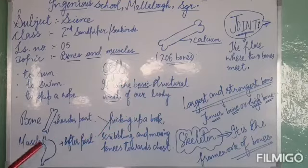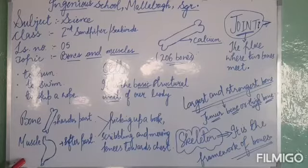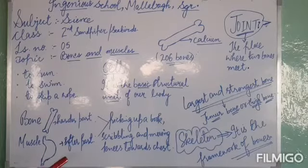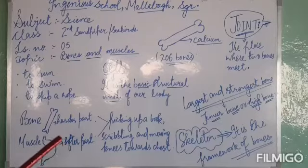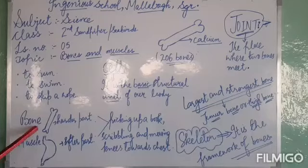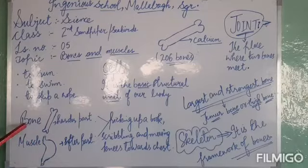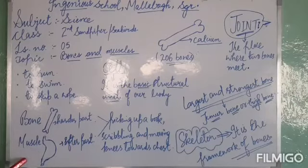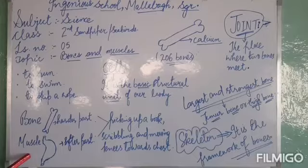Now, dear kids, try to touch the front part of your knee, and then touch the back of it. What do you observe? The front part is hard whereas the back is soft. The harder part you touch is called the bone, and the softer part you touch is called the muscle.